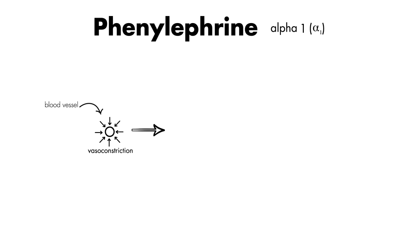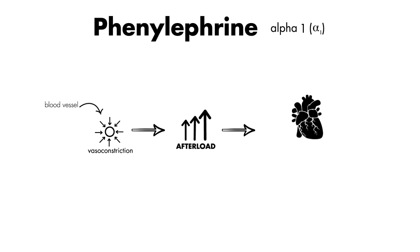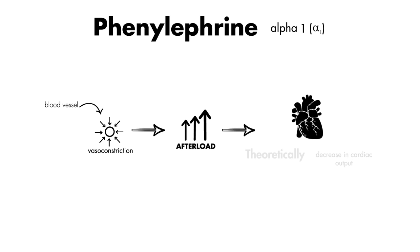Because phenylephrine acts primarily on alpha-1 receptors on blood vessels, without any effects on chronotropy and inotropy, it theoretically can cause a reduction in cardiac output. Whether or not this is true in reality is up to debate, but most studies show that cardiac output is either maintained or actually increased in patients without pre-existing cardiac dysfunction.